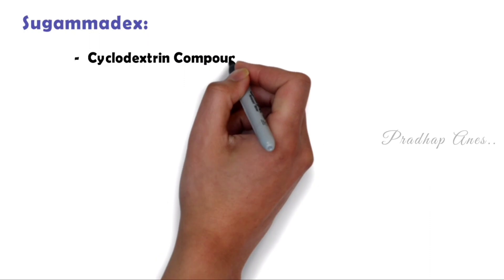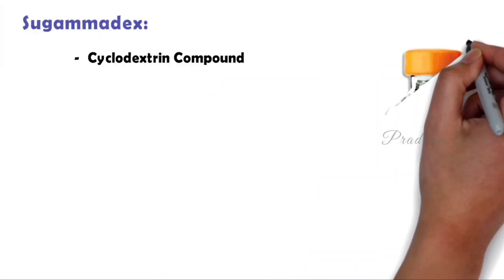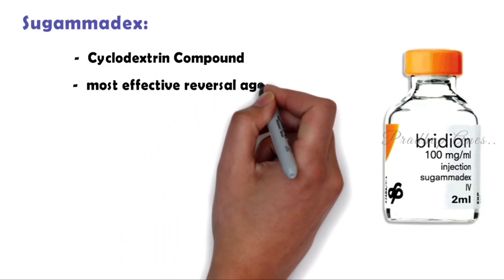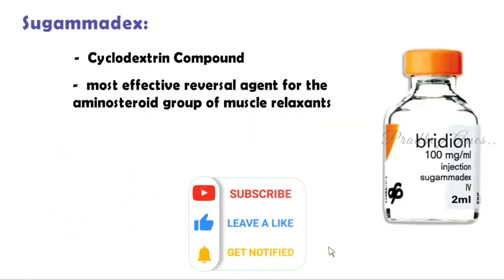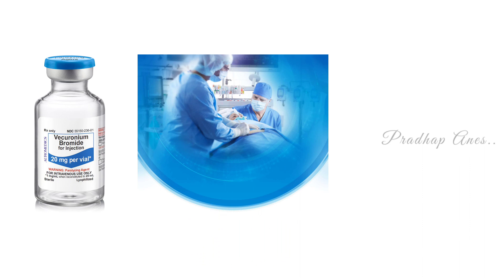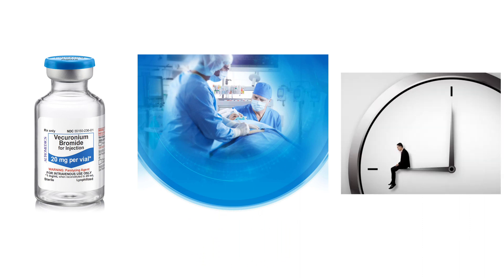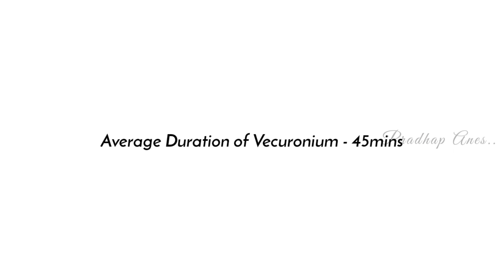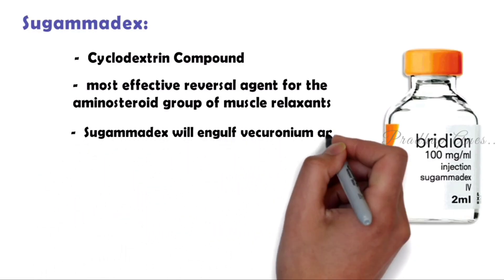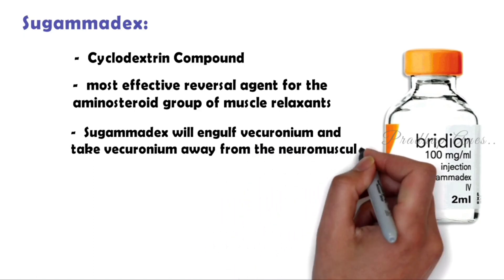Sugammadex is a cyclodextrin compound. This cyclodextrin structure is similar to the aminosteroid group, so it is the most effective reversal agent for the aminosteroid group of muscle relaxants. For example, if an aminosteroid muscle relaxant like vecuronium is given intravenously and the surgery finishes within 15 minutes, instead of waiting for the remaining 30 minutes of its average 45-minute duration, we can use sugammadex. Sugammadex will engulf vecuronium and take it away from the neuromuscular junction.